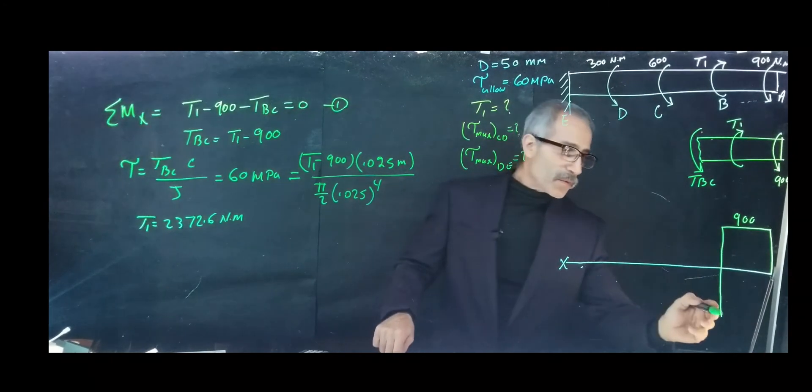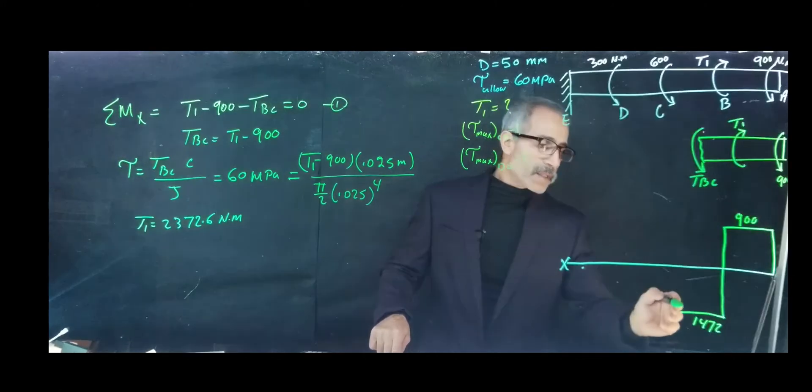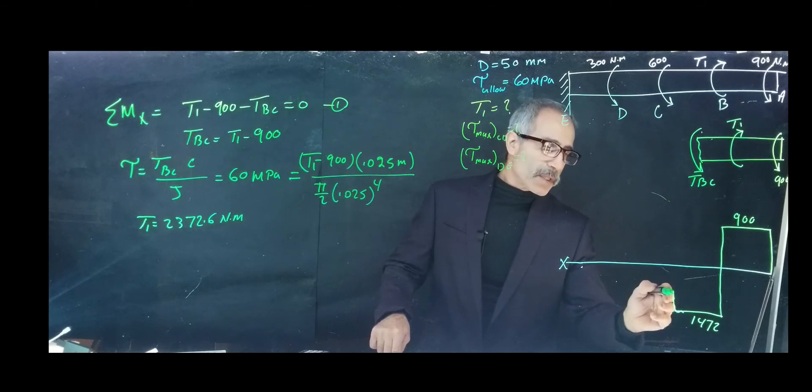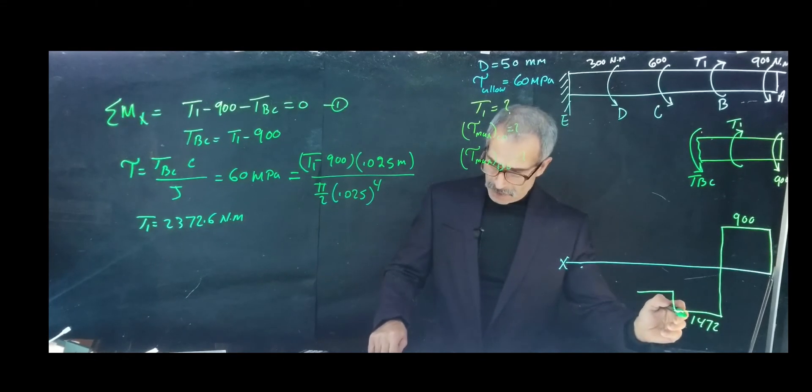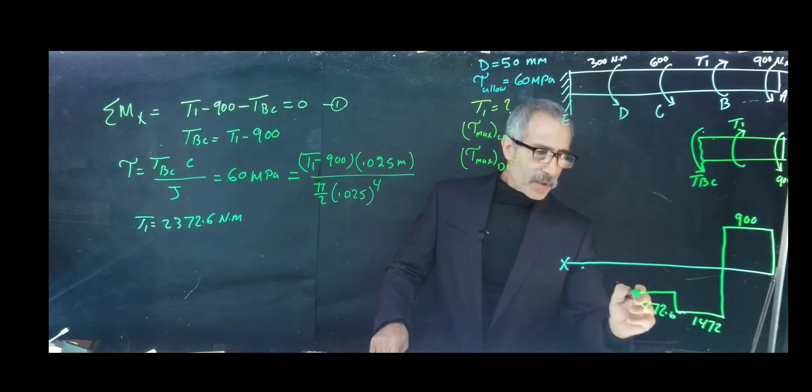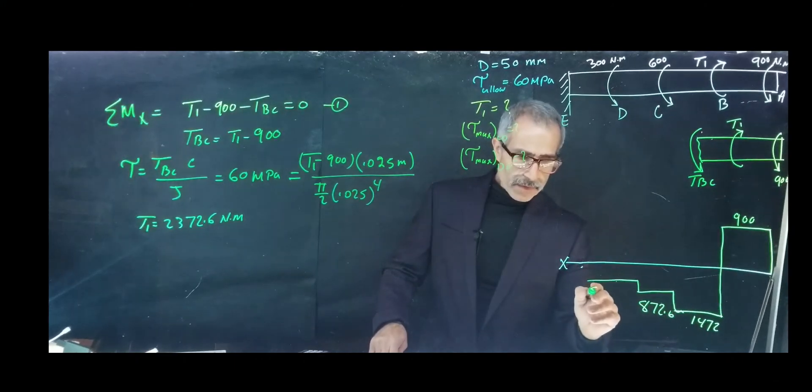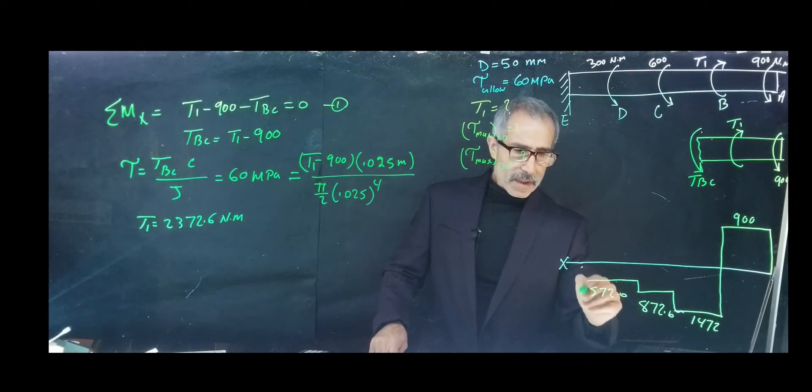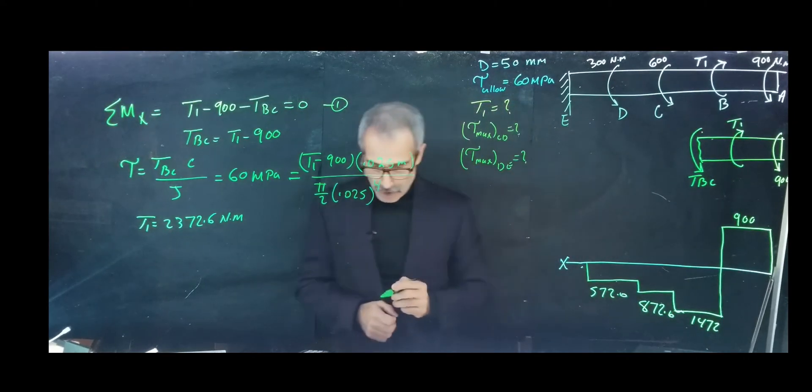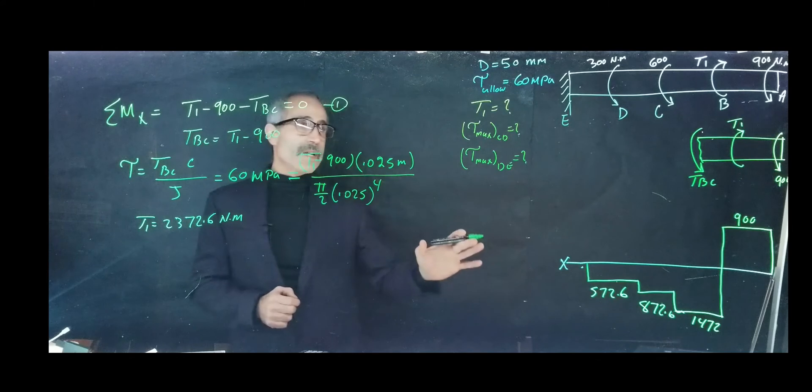Then we subtract 600, which brings us to 1472. We keep going and this will be 872.6. Then we go up 300 and that's going to be 572.6. The moment is 572.6 right there.